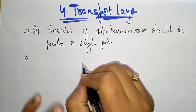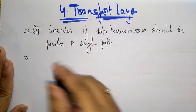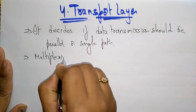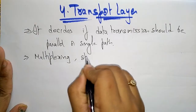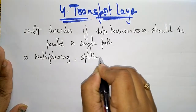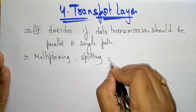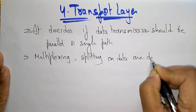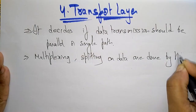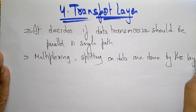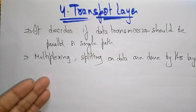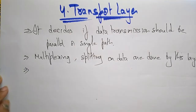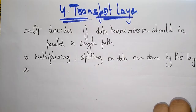The next functions are multiplexing, segmenting, and splitting of data, which are done by this layer. Multiplexing means combining, and splitting means dividing data. So this layer is not only selecting the transmission path but also doing the work of multiplexing and splitting data.